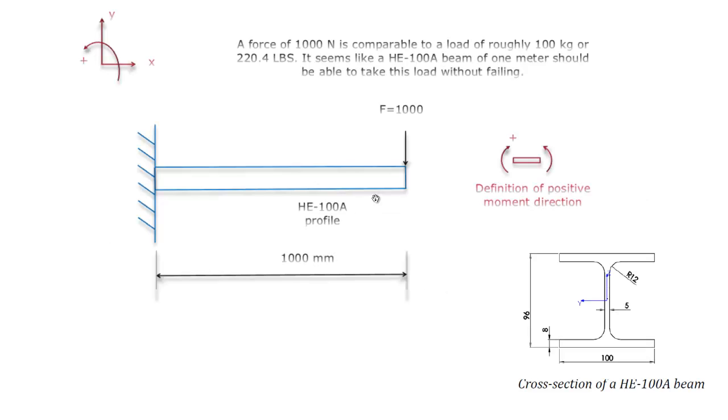So here's what I'm going to analyze. I'm going to analyze an HE100 profile. You can see the dimensions over here under a force load of 1000 N. And before you start the analysis, it's always good to think whether or not this is going to hold the load or not. So for me a load of 100 kg seems like it should be possible to be held by this beam with this format made of steel.